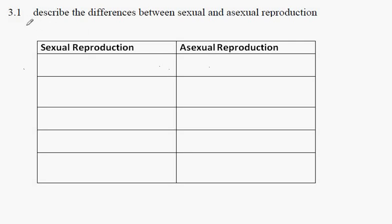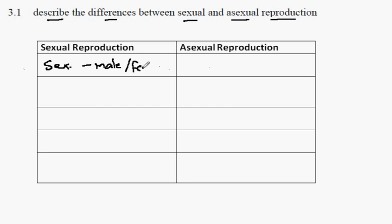IGCSE Biology syllabus statement 3.1. Here we're looking to describe the differences between sexual and asexual reproduction. Organisms that show sexual reproduction show sexes — that is, we can identify what is known as a male or a female. No such sexes exist in asexual reproduction.